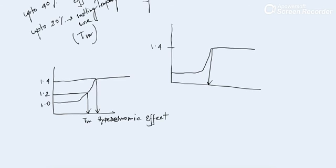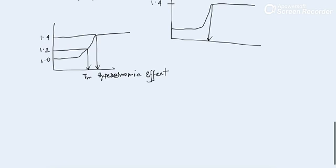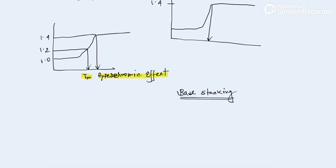Now you might ask — it seems straightforward, so why am I discussing it? But the key question is: why does the hyperchromic effect increase up to 40 percent? What is the reason behind it? To understand this, there is another term we have to know — that is base stacking. The whole hyperchromic effect depends on this term: base stacking.